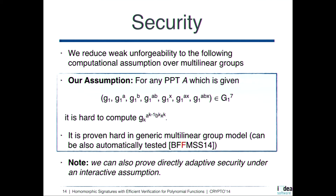That's the toy scheme. The security of this scheme is proven under a new assumption we propose in multilinear groups. Roughly speaking, the assumption says that given encodings at level one of random A, B, X in the form as in the public key of the toy scheme, it is hard to come up with an encoding at level K of A^{K-1} · B^K · X^K. We prove this to be hard in the generic multilinear group model, and it can also be tested using the tool presented yesterday.